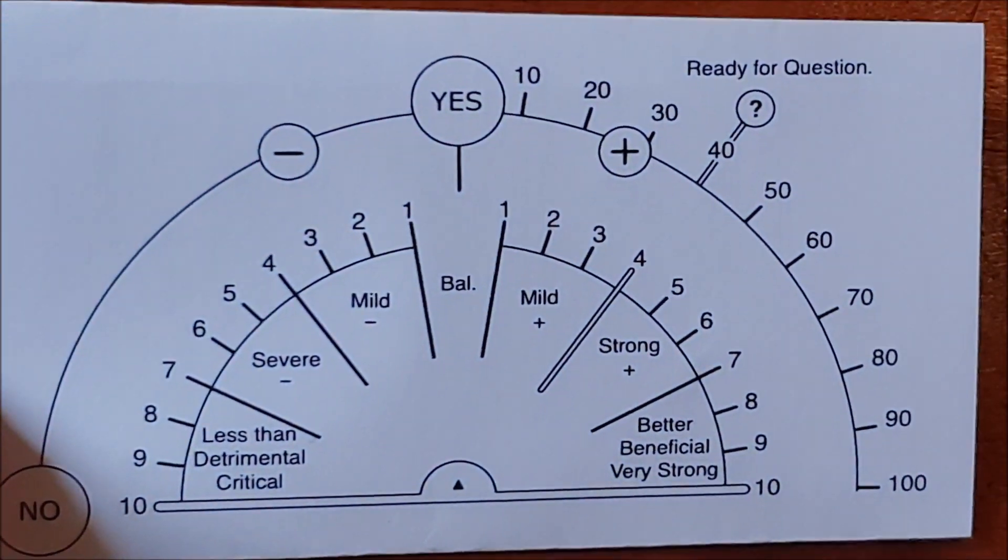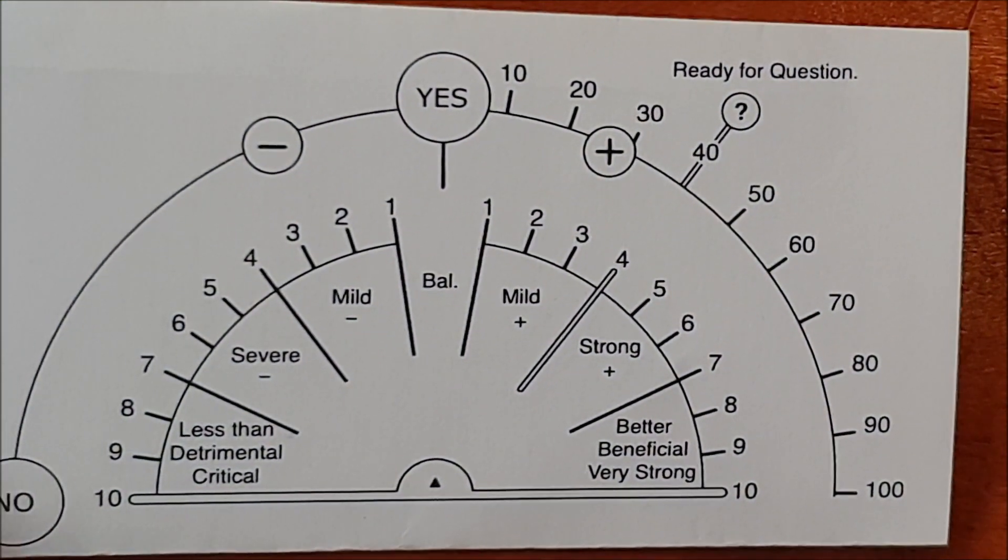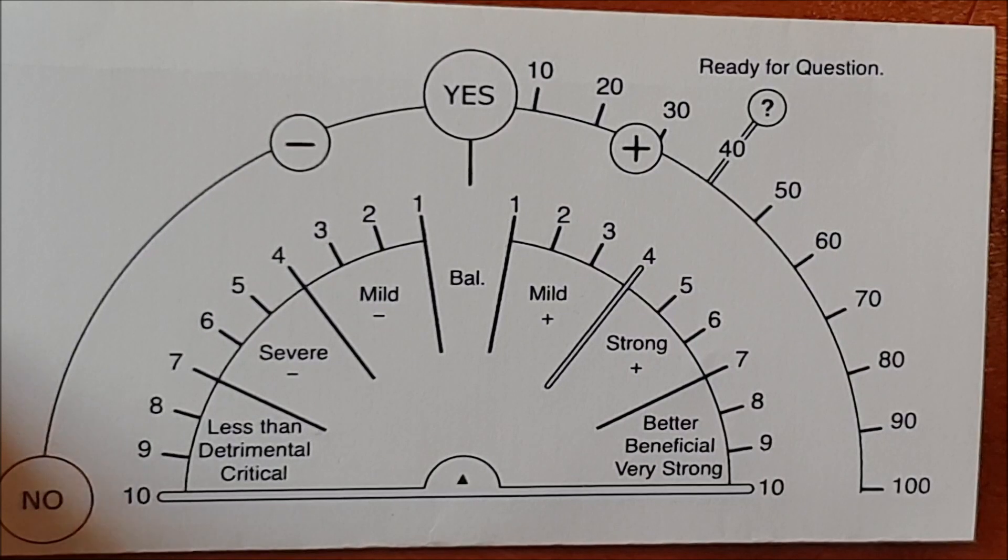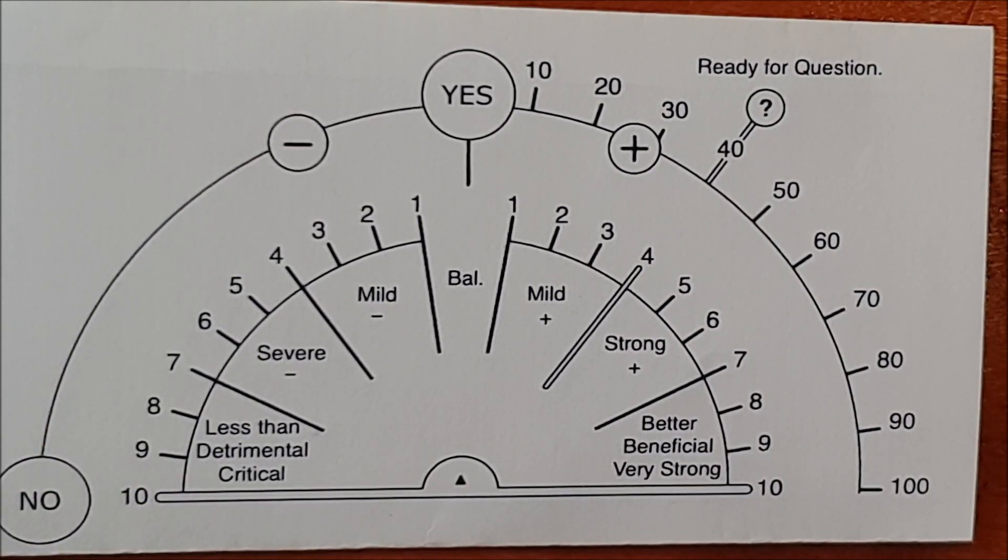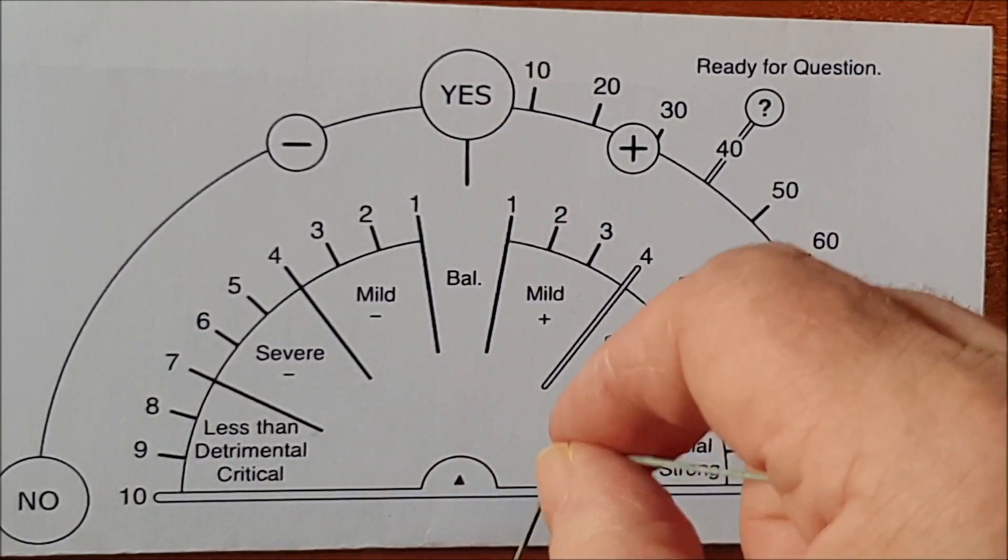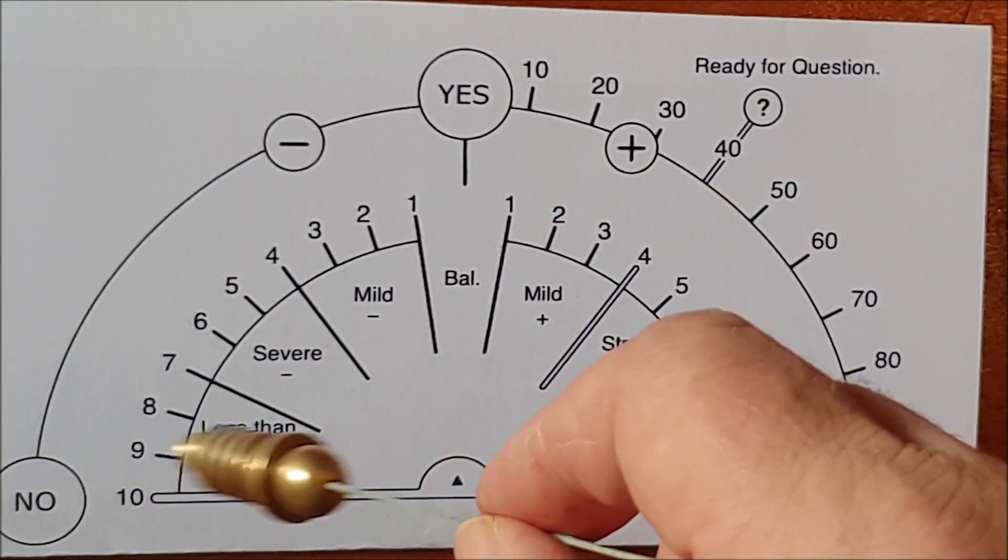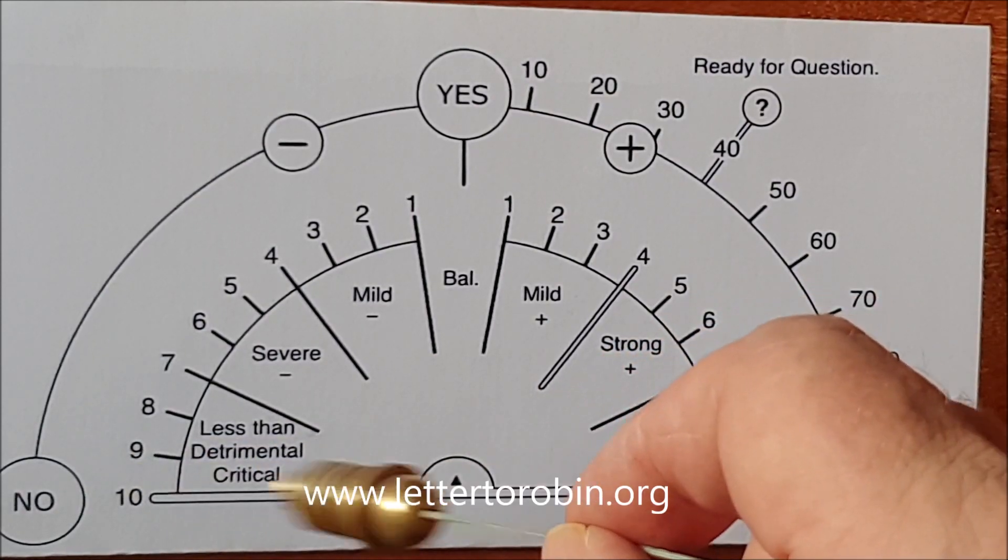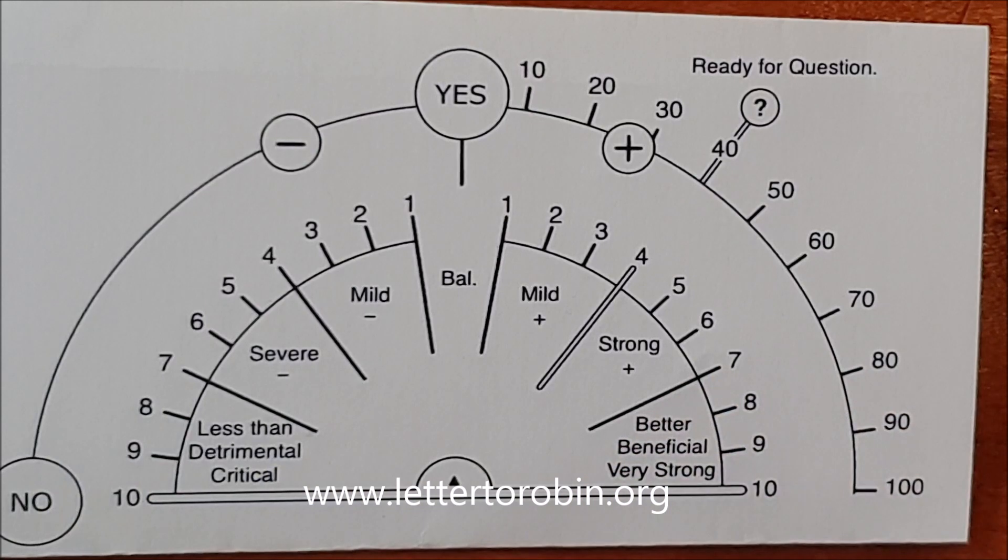This model here is from Letter to Robin and it's very popular with American dowsers. You can see it's a little bit more complicated. This relies on you having a different reaction for yes and no. For yes it goes straight up and down here but for no it goes side to side. This is the method taught in the book Letter to Robin which you can get online at lettertorobin.org.